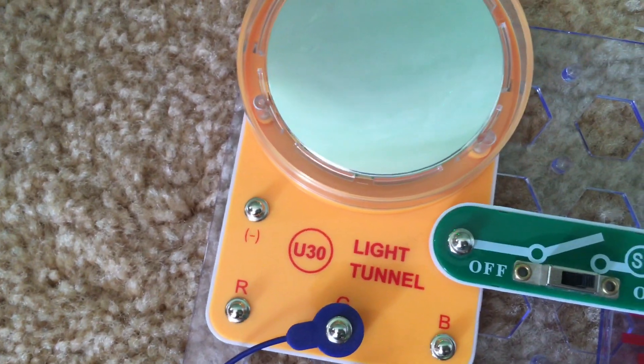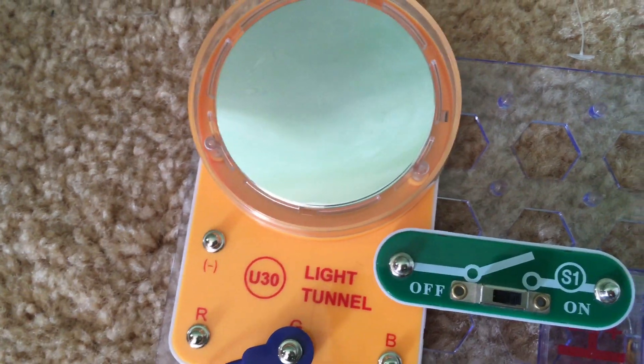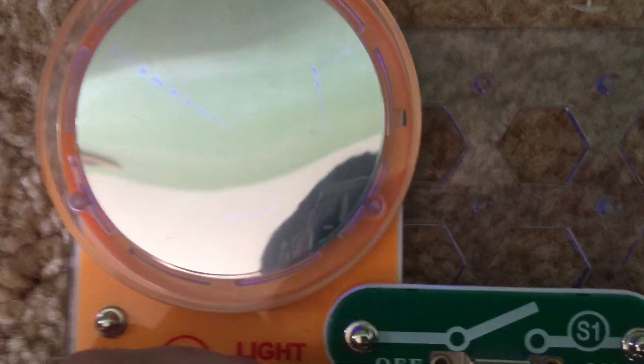Now for project 121, blue double blinker, I will move the end of the blue jumper wire to point B on the light tunnel and now only the blue LEDs light up.